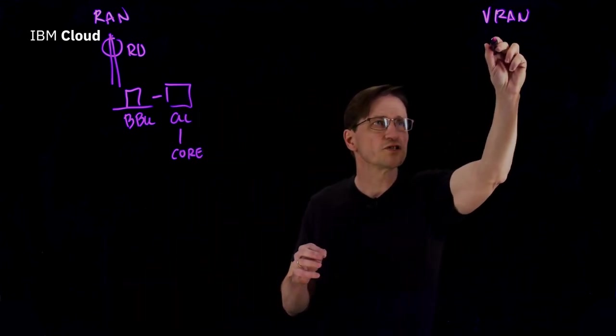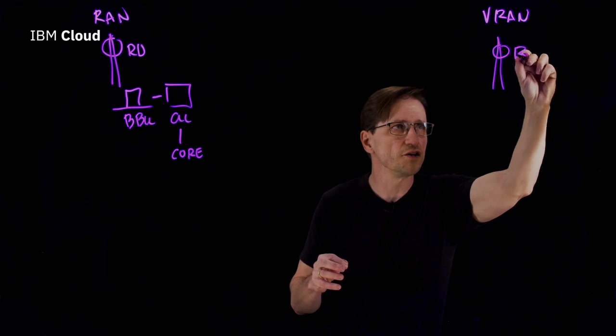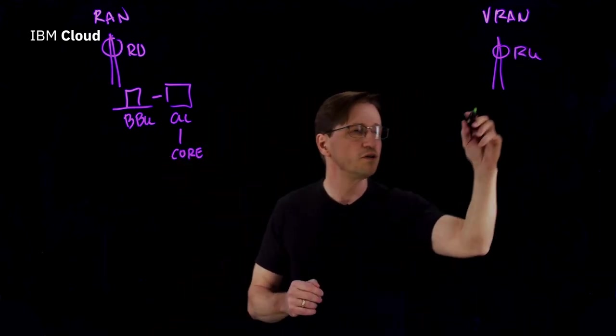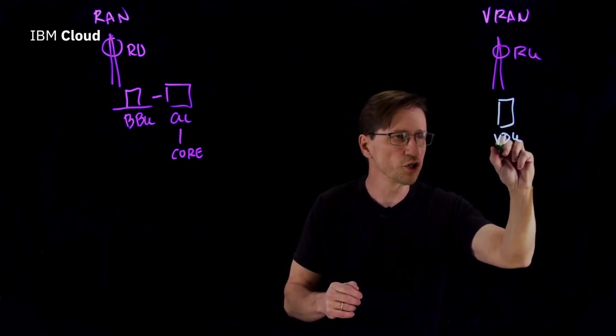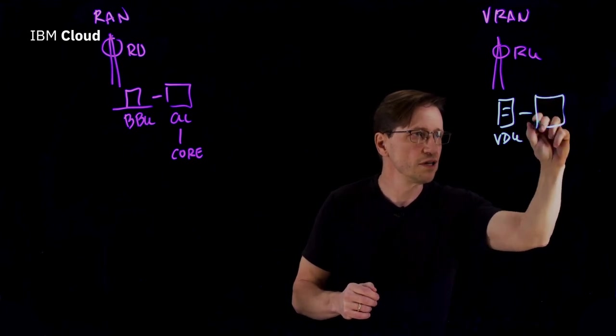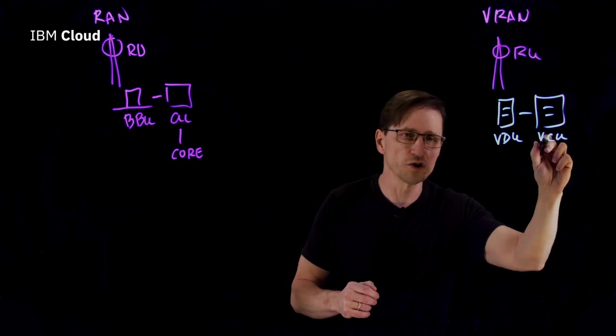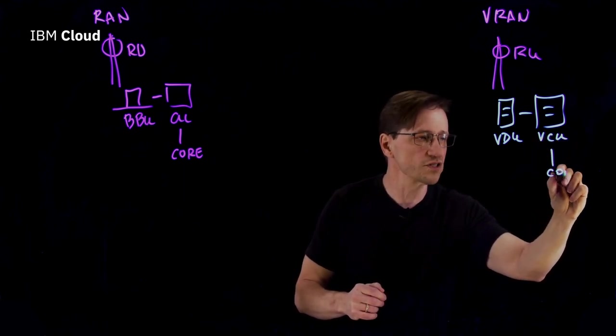So for VRAN, the picture starts out basically the same. We have a tower, antenna, and RU. But what's different is, instead of the BBU, we have a different device called a VDU, or Virtual Distribution Unit. It then connects to a different piece of equipment called a VCU, or Virtual Central Unit, which connects then to the core network just as before.